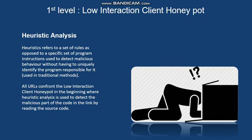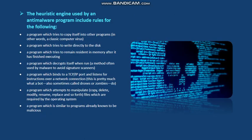Malicious links that interact firstly with the low interaction honeypot may change their codes, making them difficult to identify by traditional antivirus methods. Hence, we perform a heuristic analysis to detect any part of the malicious code. This analysis looks through the source code of the URL and finds any malicious part in it. These are the rules of how a heuristic engine basically works.